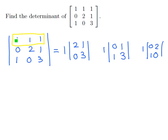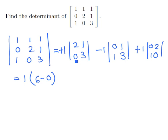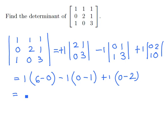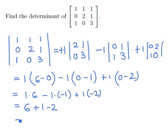When we put the checkerboard mnemonic signs on of plus, minus, plus, then we see we want to add the first one, subtract the second one, and add the third one. We're going to have 1 times the small determinant of 6 minus 0 (main diagonal minus the counter diagonal), minus 1 times 0 minus 1, plus 1 times 0 minus 2. So that's 1 times 6, minus 1 times minus 1, plus 1 times minus 2, or 6 minus minus 1 minus 2. And that gives us a grand total of 5.